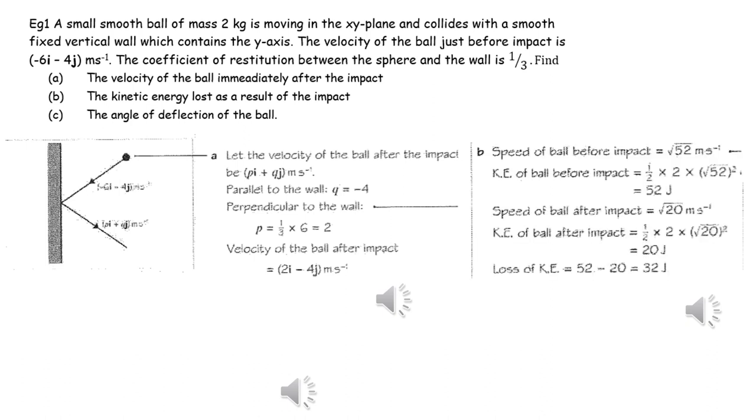We can calculate the speed of the ball before and after impact by just working out the magnitude of the velocity vectors, and then using the fact that kinetic energy is a half mv squared, and work out the difference between the initial KE and the final KE.